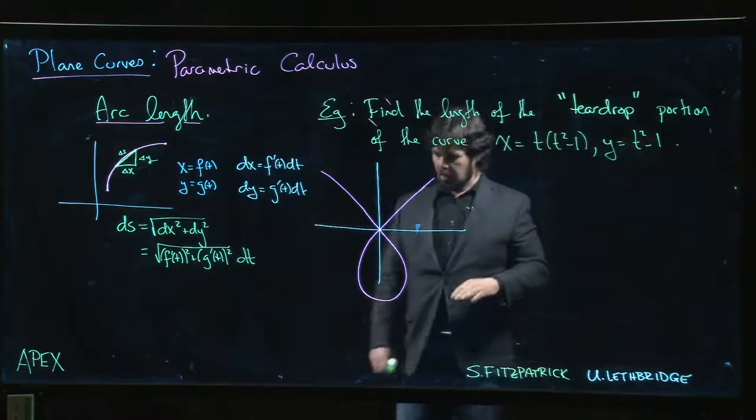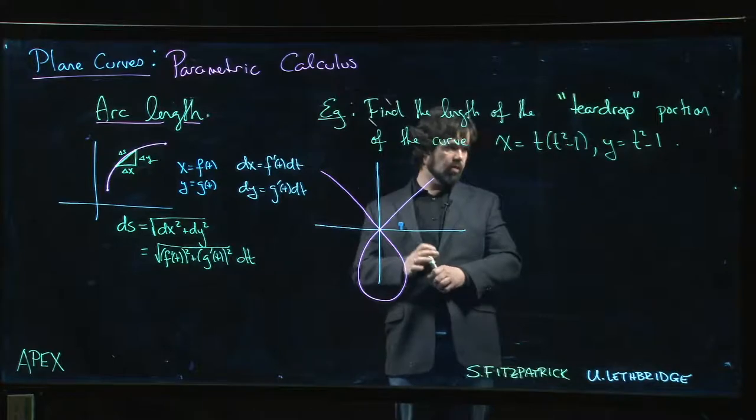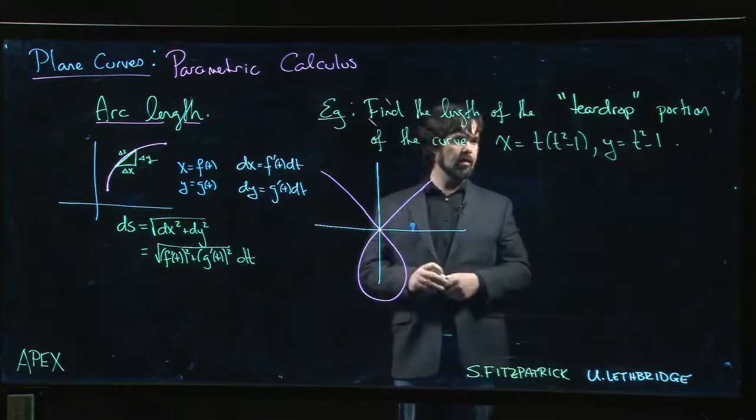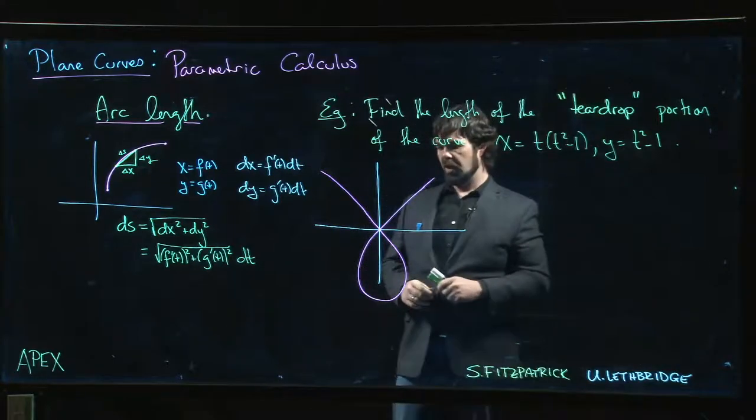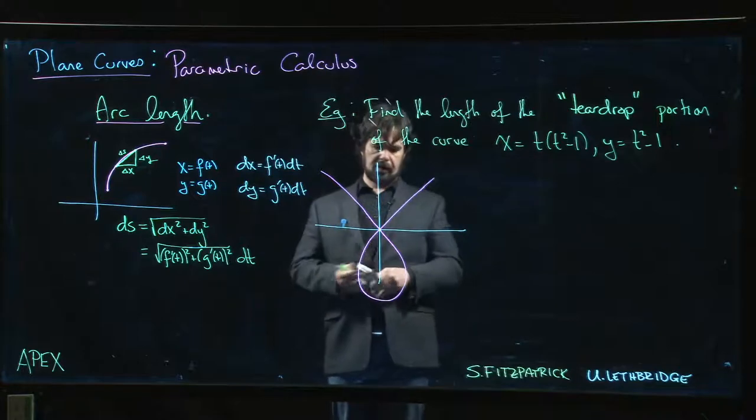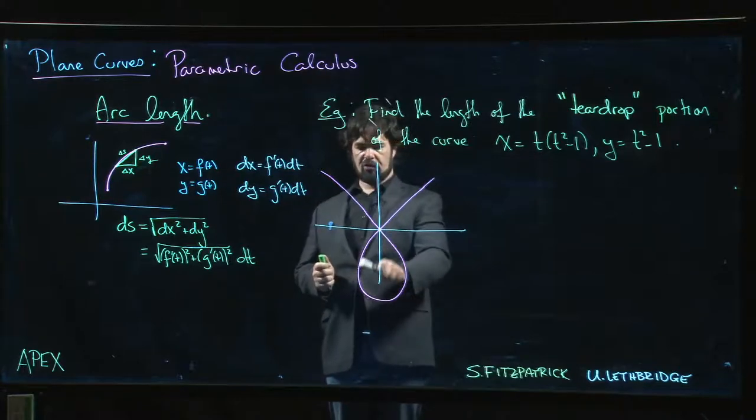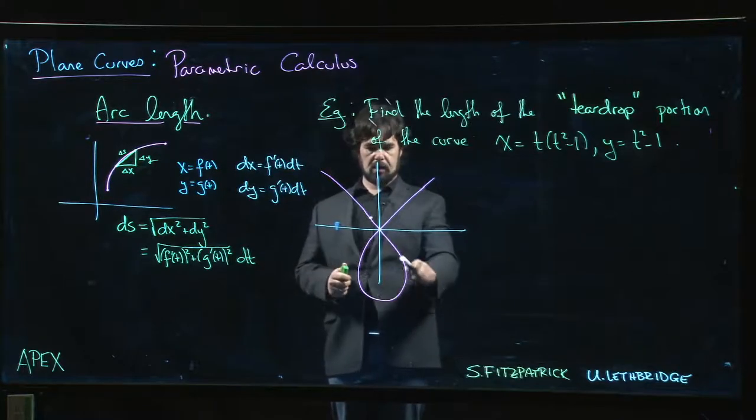Let's do another arc length problem. This time here we have this teardrop curve that's an interesting parametric curve given by these equations. We want to find the length of just the teardrop portion of the curve, right from here to here.